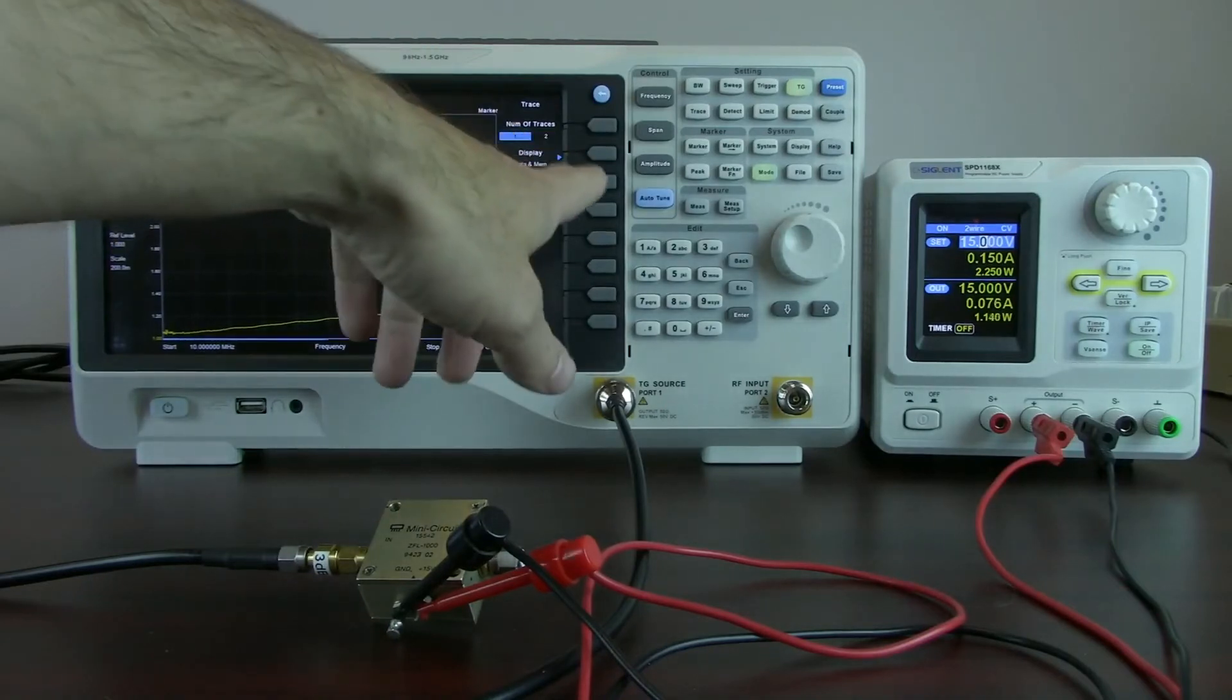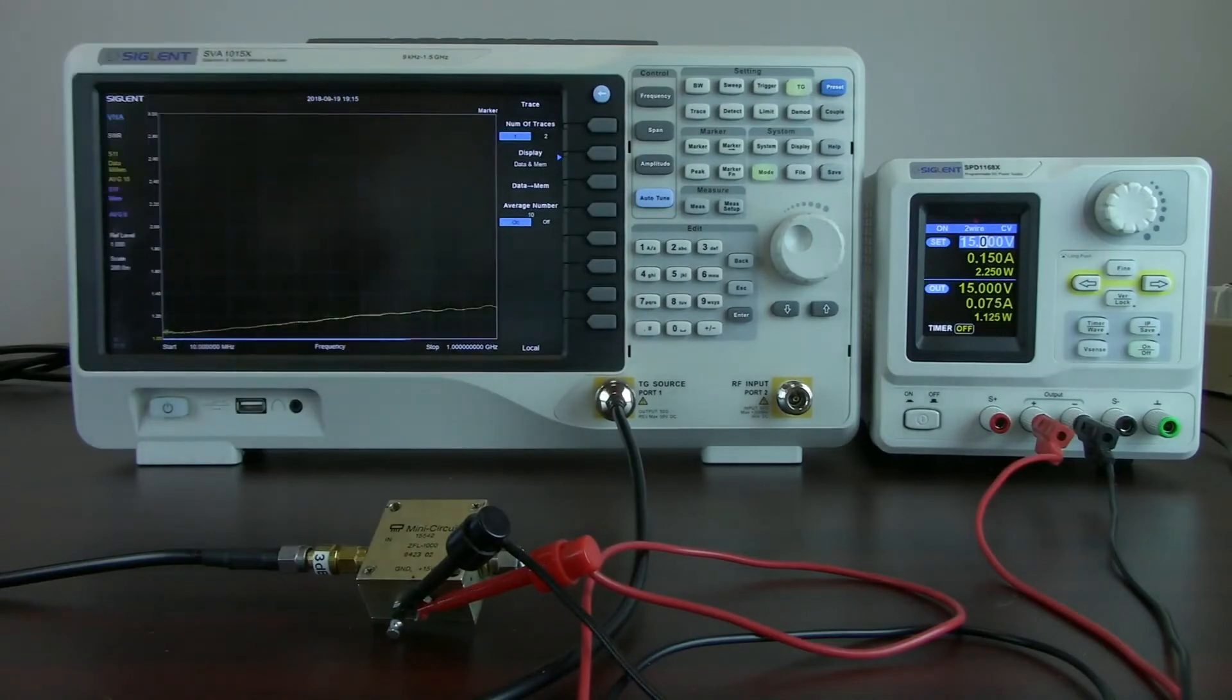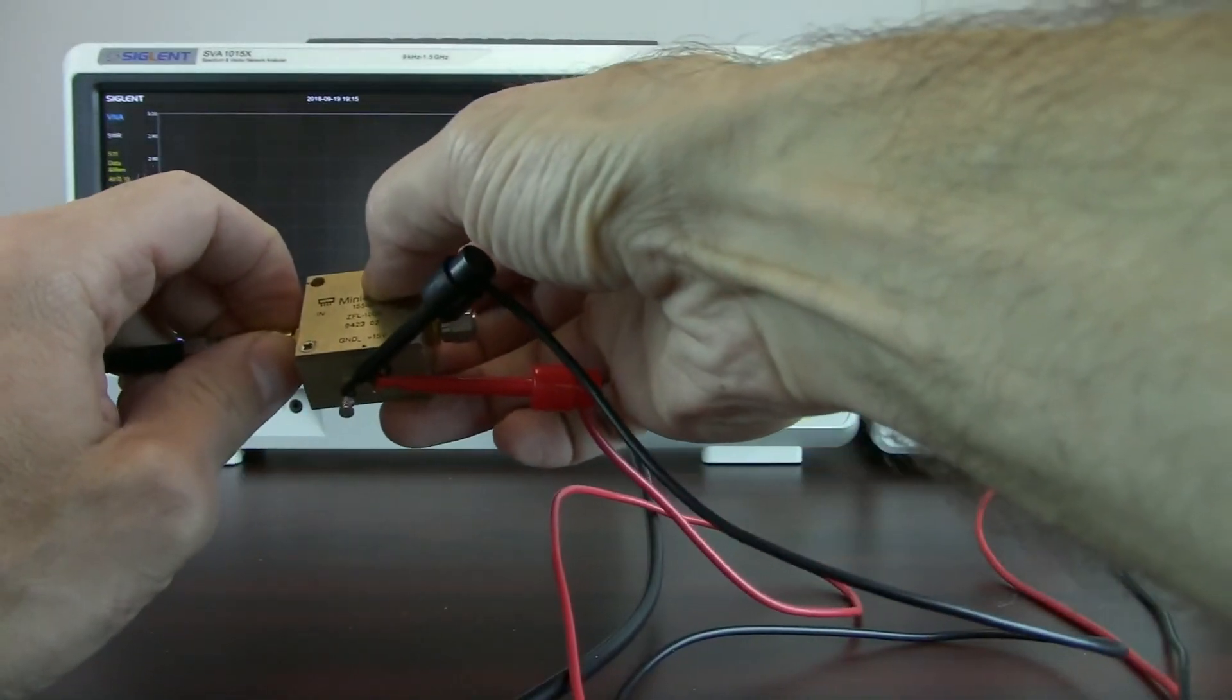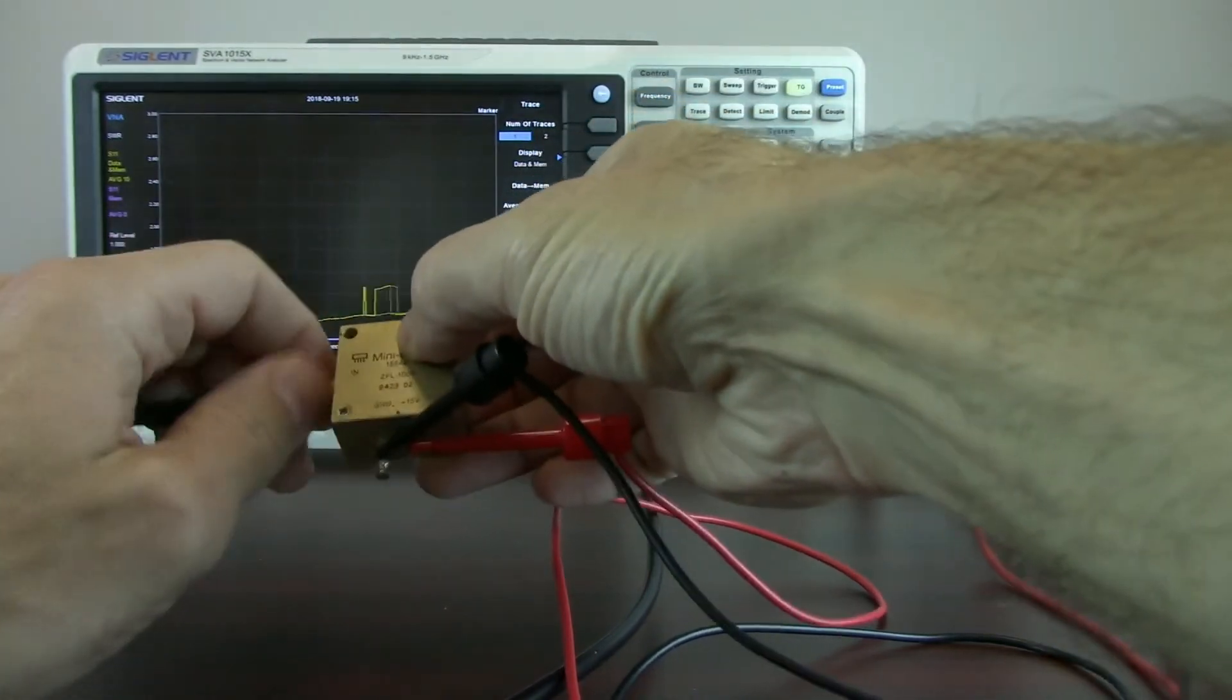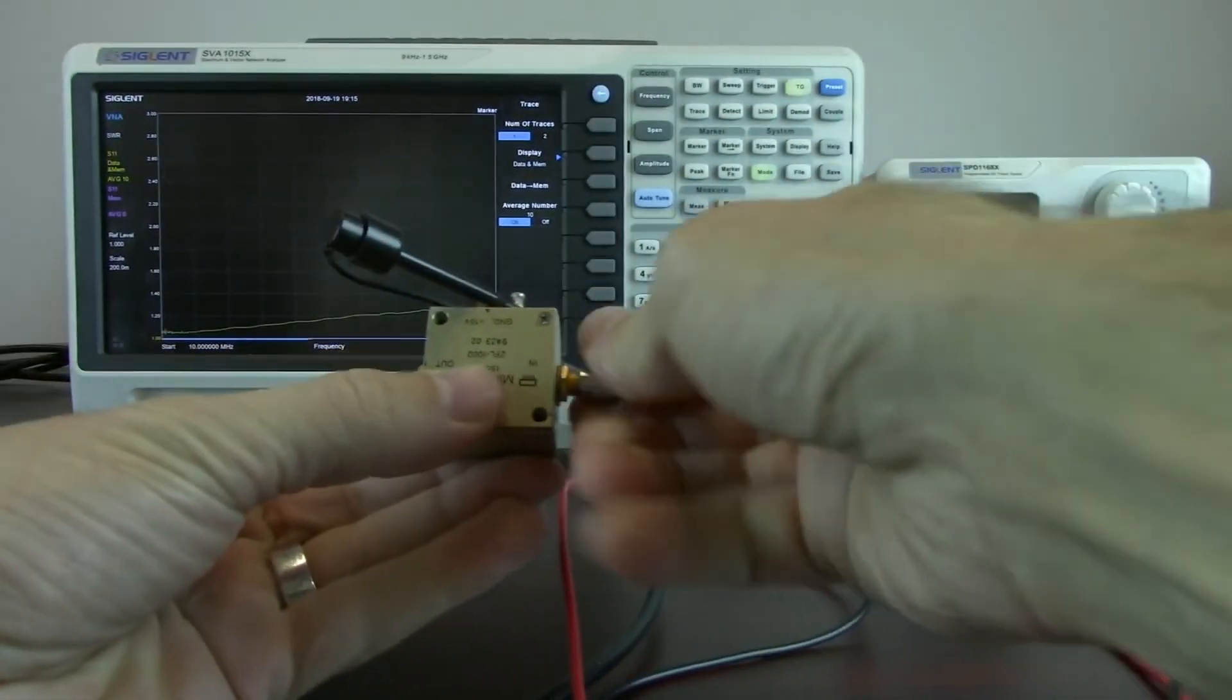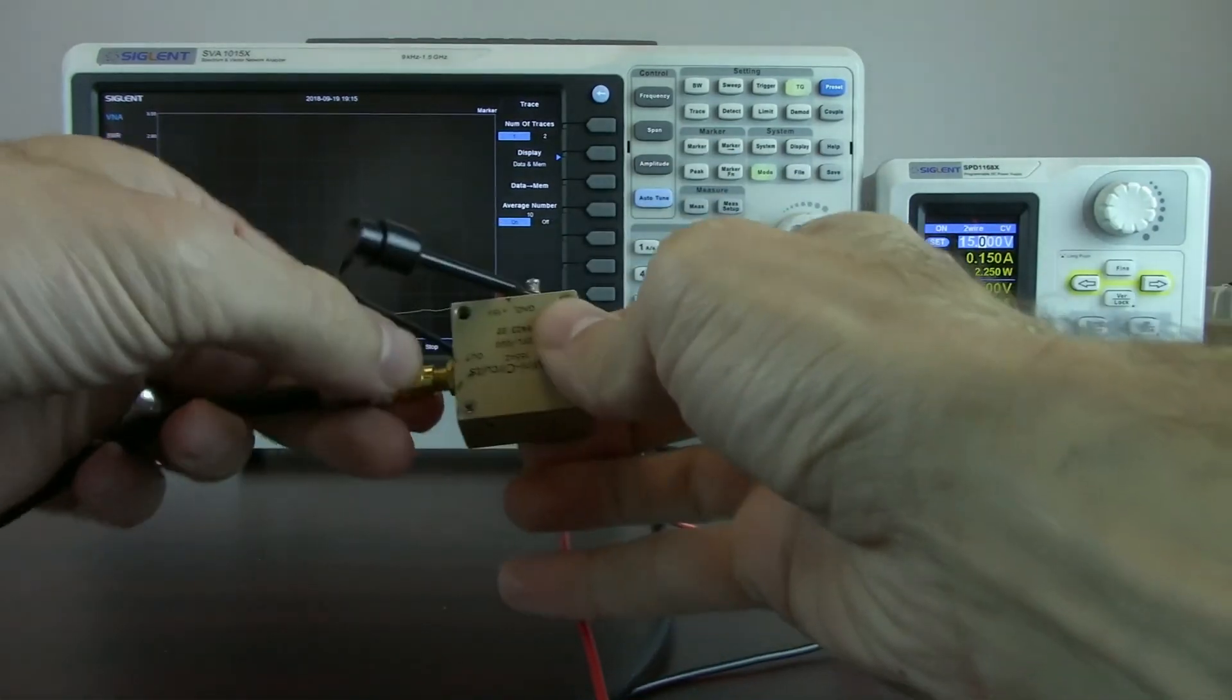I can save that into memory. So I can go data memory and that's going to freeze that particular input curve for the VSWR. And now let's take a look at the output curve. So I'm simply going to disconnect the cabling from the input and take that termination and I'm going to just flip it around to the input. And now we'll measure the VSWR of the output.